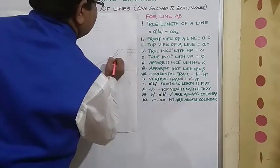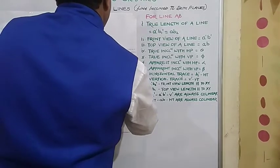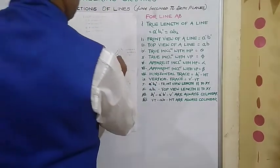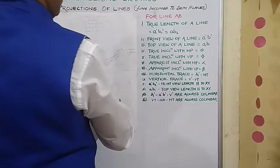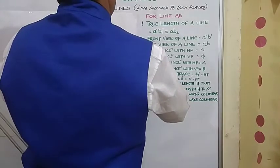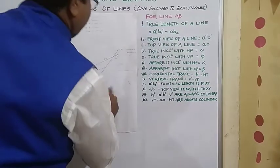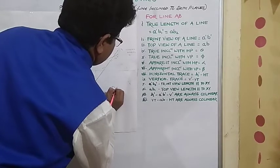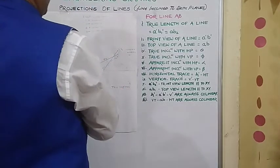So this is A dash B dash front view. A B top view. A dash B one dash true length. A B two true length. Measure true length. Definitely you will find it is coming true length almost one zero five, 105 millimeter.